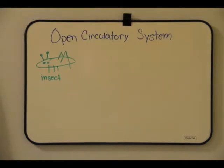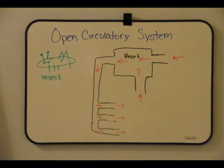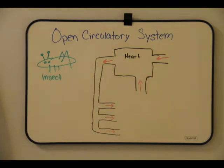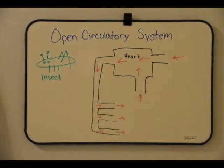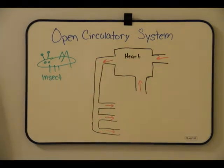Most insects, arthropods, and mollusks have an open circulatory system in which blood directly surrounds organs and is not distinct from the interstitial fluid. The heart pumps this fluid, called hemolymph, through a system of sinuses or spaces around organs, allowing for chemical exchange. When the tubular heart contracts, it pumps hemolymph through vessels and out into the sinuses.